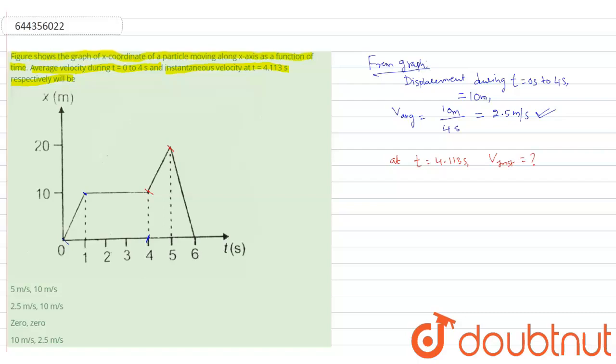So v instantaneous is equal to dx by dt. I am taking the fourth second and fifth second. At the fourth second, displacement is 10 and at fifth second it is 20. So now dx by dt equal to twenty minus ten, and the change in time is only one second, that is 5 minus 4. So we'll get here 10 by 1, that is 10 meters per second. This is the instantaneous velocity.